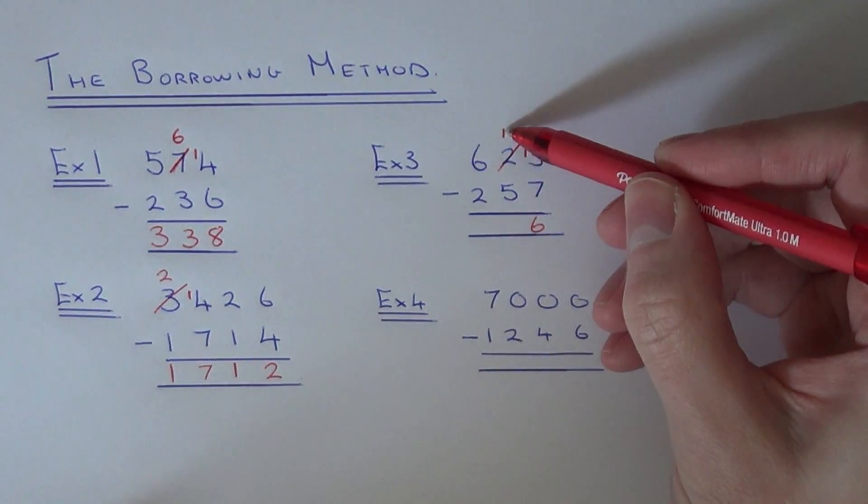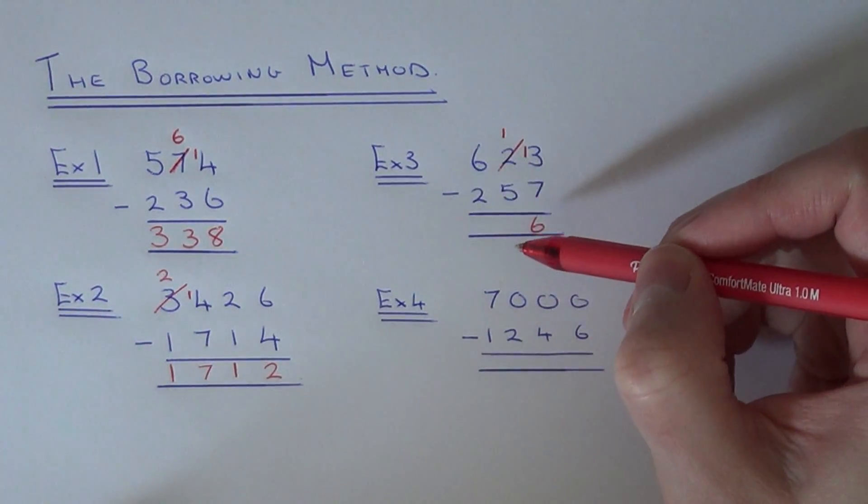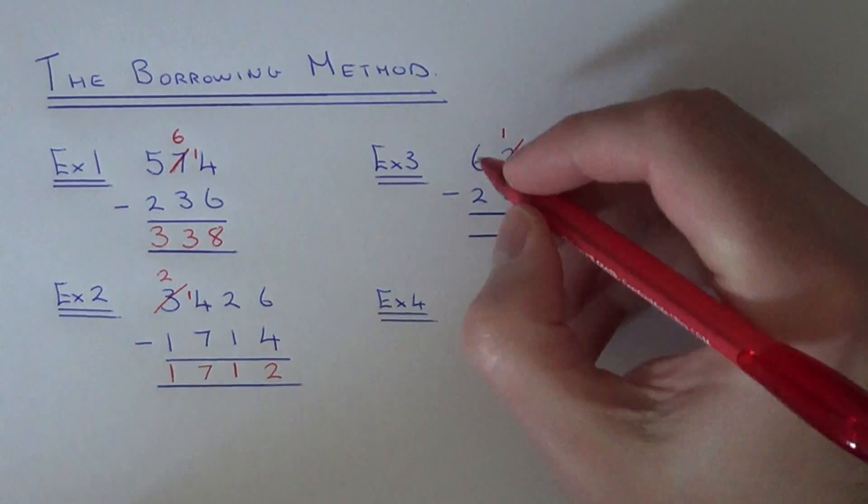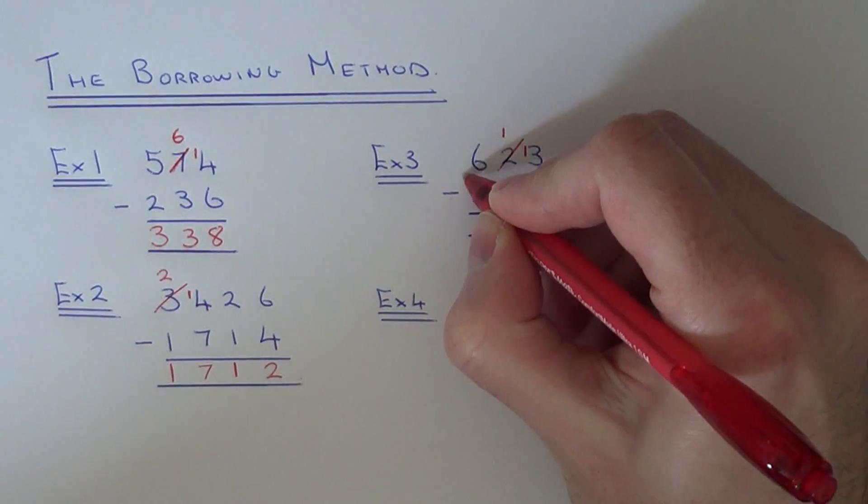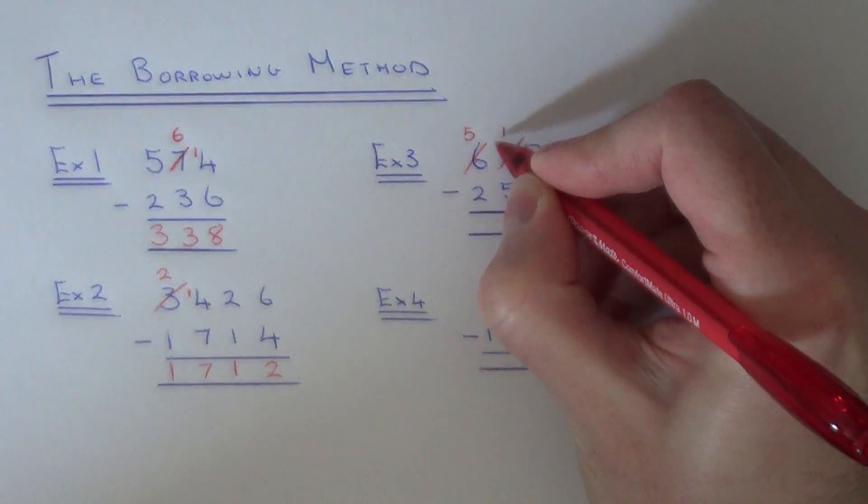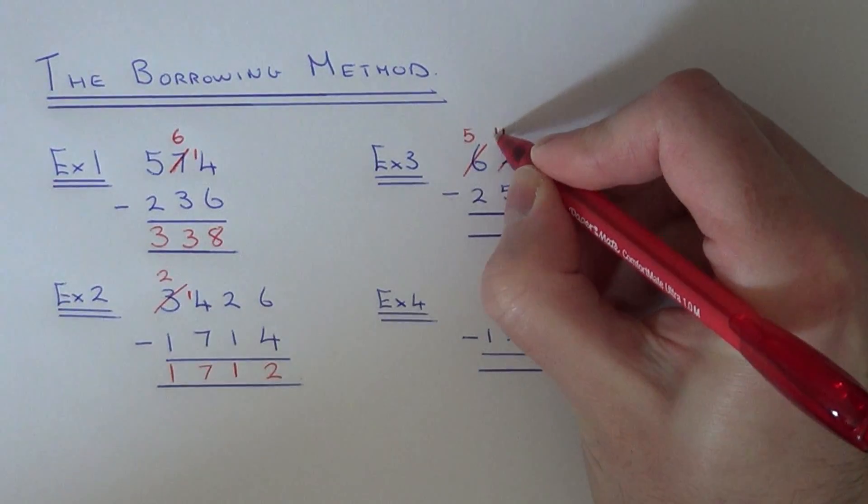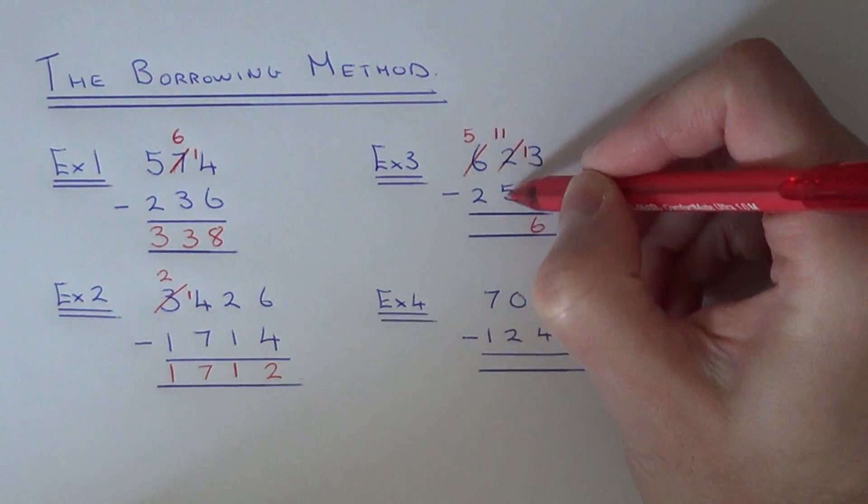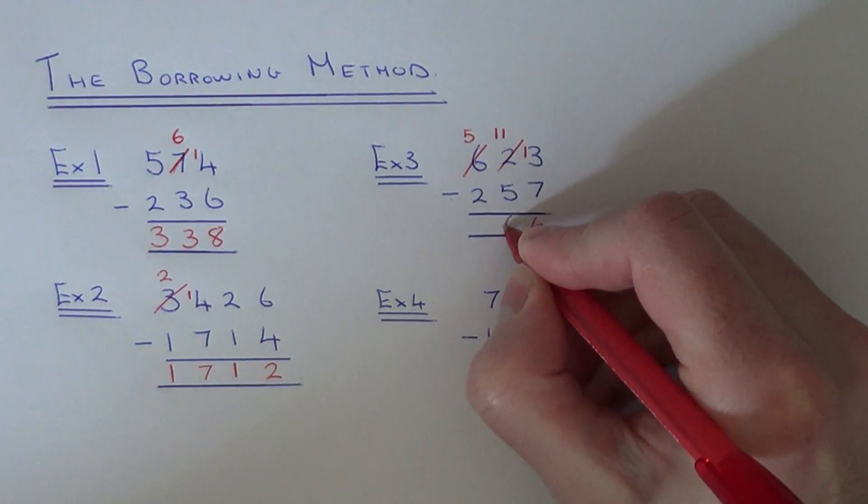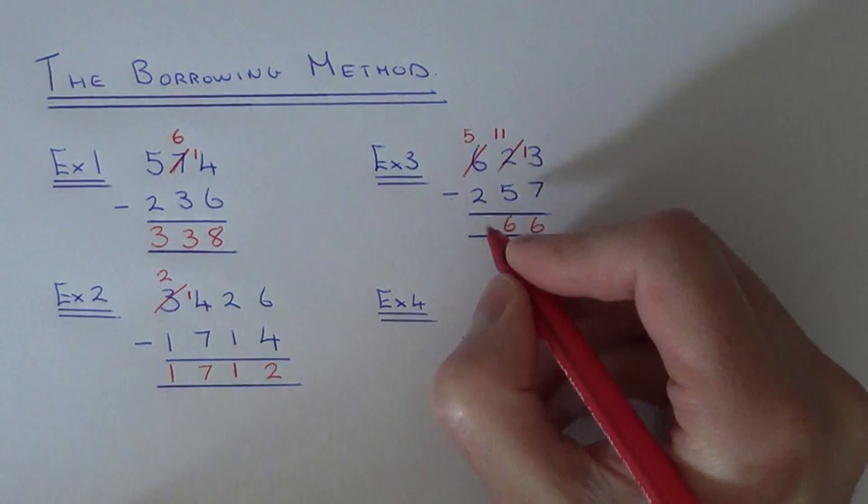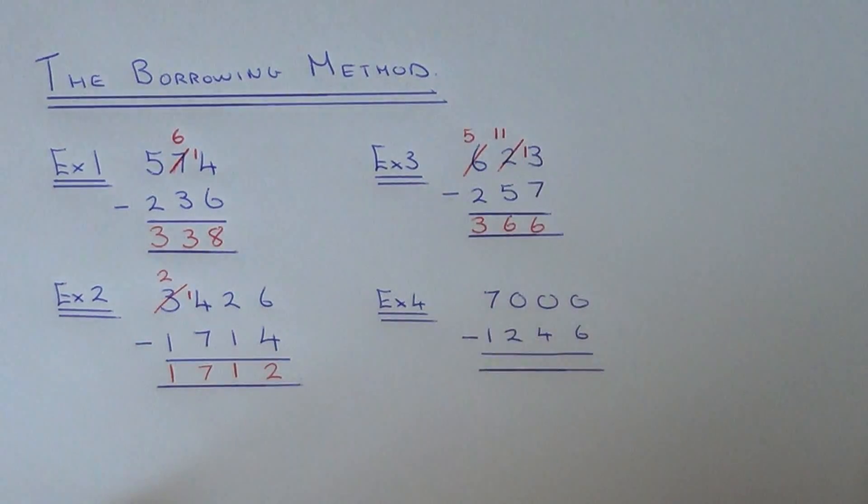The next column now you have 1 take away 5. Again you can't do this, so we need to borrow yet again. Go to the 6, take 1 off the 6—that becomes a 5—pass the 1 that you have borrowed and put it in front of the other one to make 11. Now we can do 11 take away 5, which is 6, and in the final column you have 5 take away 2, which is 3.